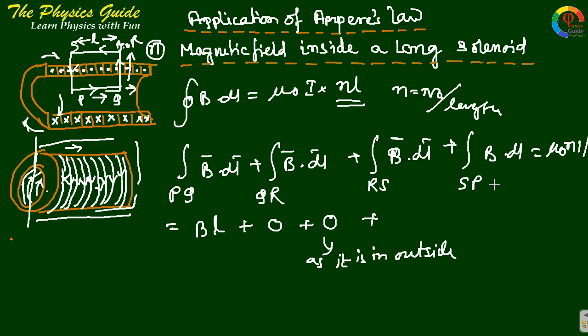Fourth term SP also zero because B perpendicular to L. This total gives μ₀NIL, therefore B equals μ₀NI.